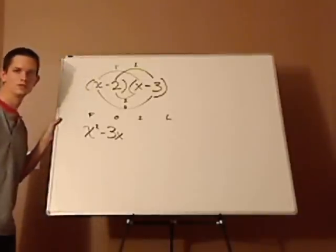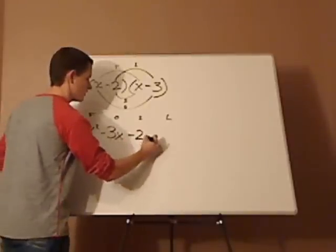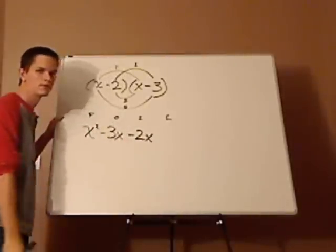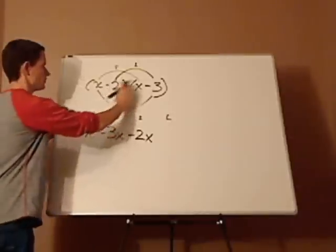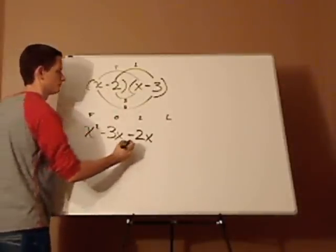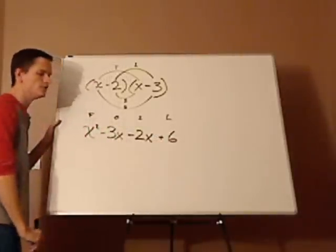Negative 2 times x is, yeah, negative 2x. And what's negative 3 times a negative 2? Because that would be your last. Right. It's plus 6.